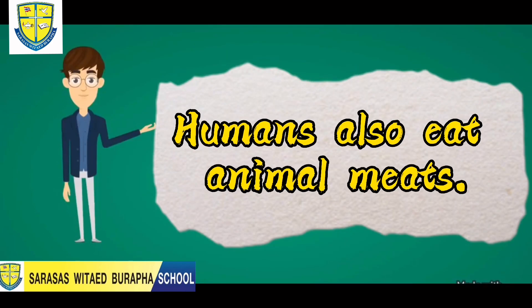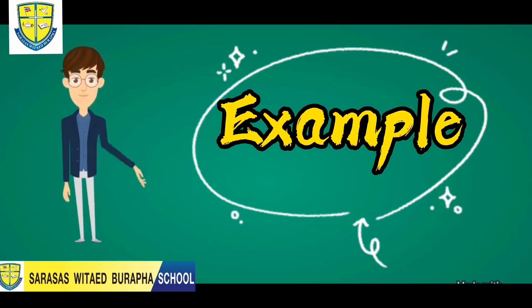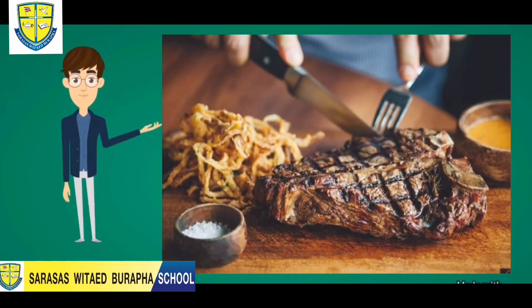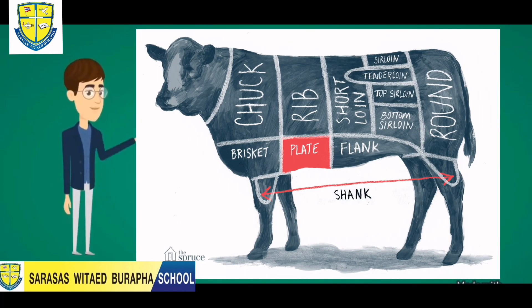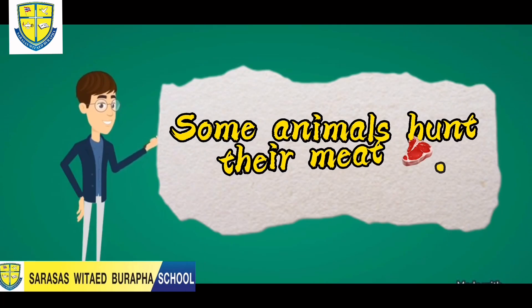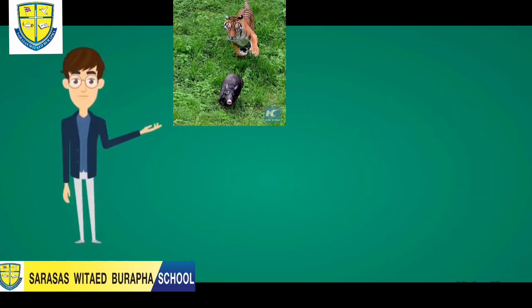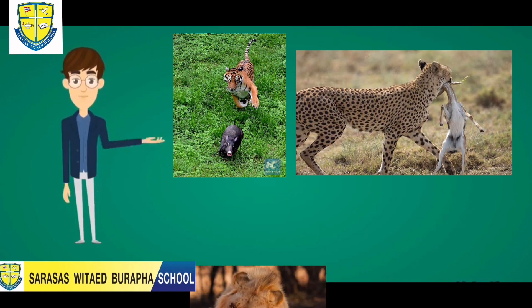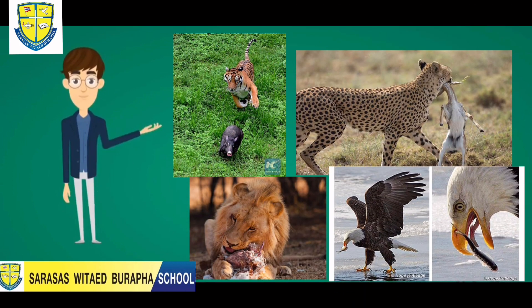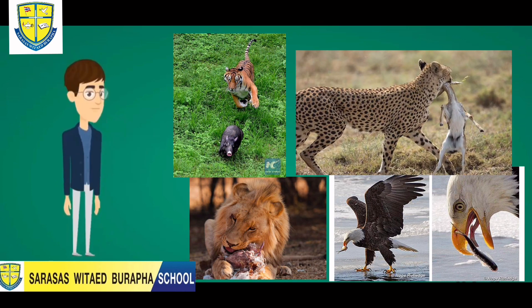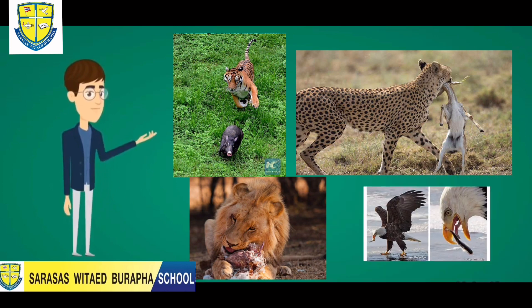Humans also consume animal meats. For example, beef steak — beef is from the meat of a cow. While other animals hunt their meat, just like animals in the wild: tiger, cheetah, lion, and even an eagle.